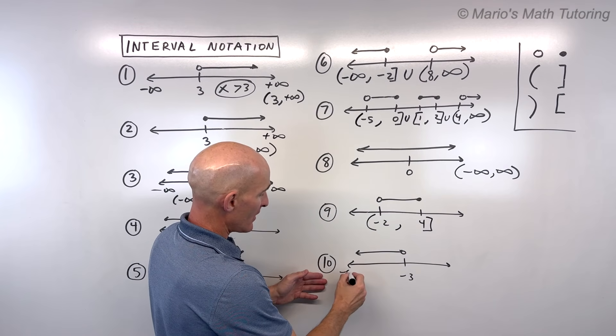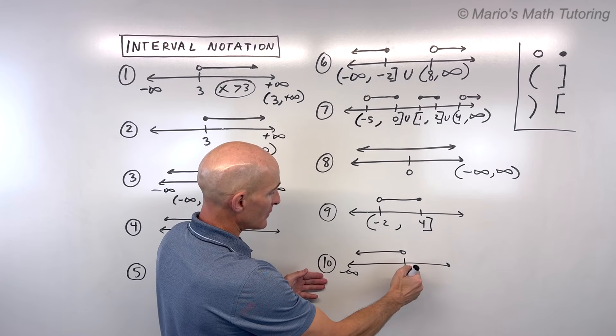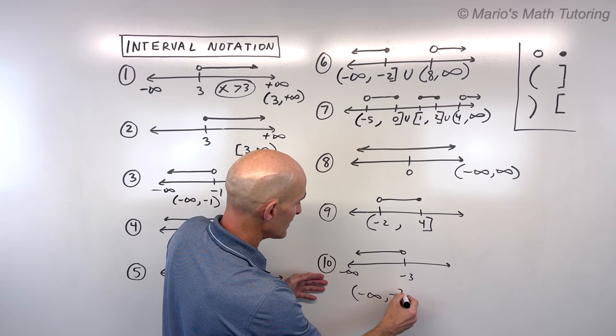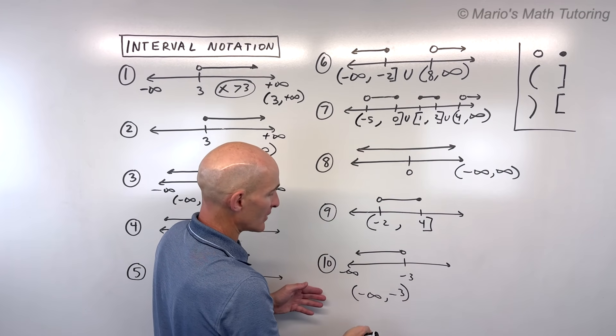For number 10, we're over here at negative infinity all the way to negative 3, not including negative 3. So I'd say parenthesis, negative infinity, to negative 3, parenthesis. We don't want to include negative 3.